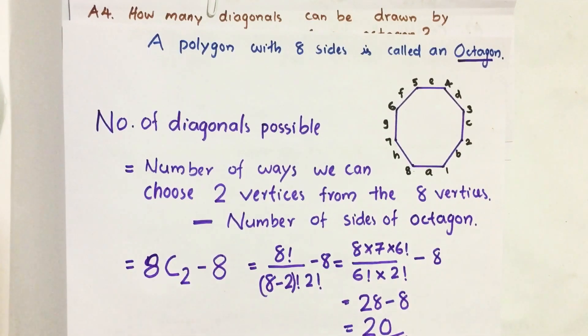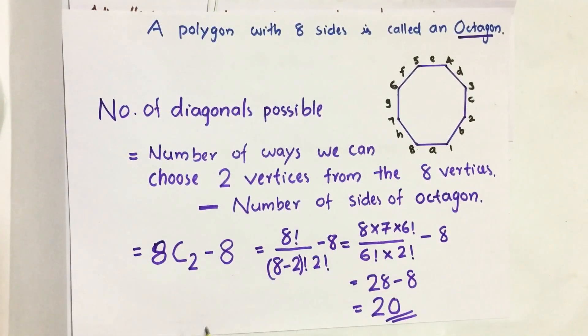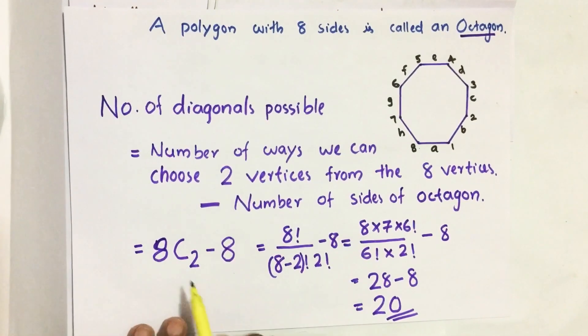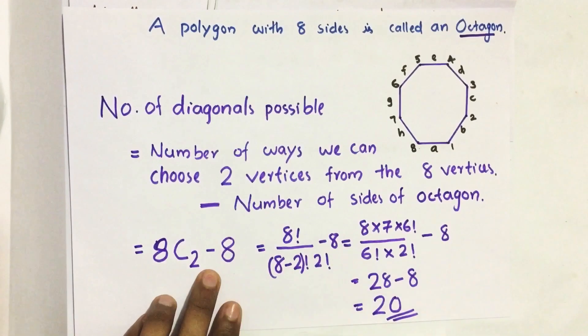That means those points we choose are adjacent, which equals different combinations possible when choosing 2 vertices out of 8, equal to 8C2 minus the number of sides equal to 8.